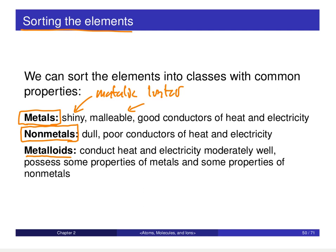Metalloids are elements that have properties falling somewhere in between metals and nonmetals. Metalloid literally means resembling metals, but they're not actually metals. These metalloids do conduct heat and electricity moderately well — not as good as metals, but not insulators like nonmetals either. In general, metalloids will have some properties of metals and some properties of nonmetals.